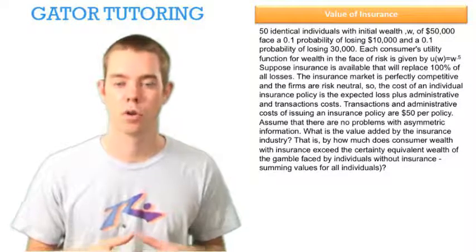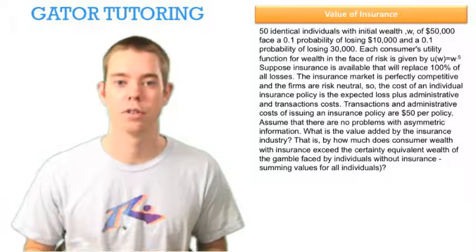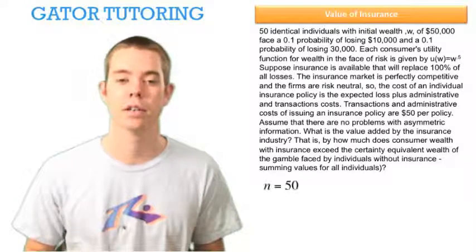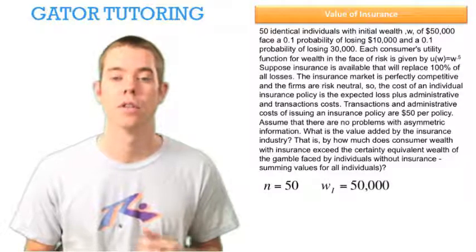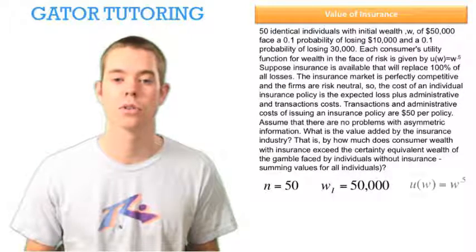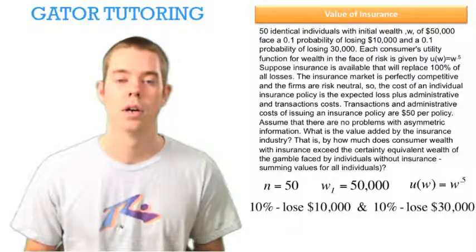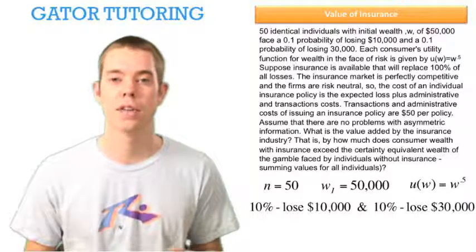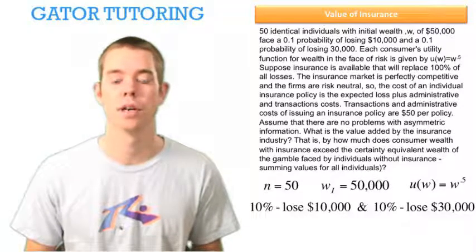This question starts out by giving us a whole bunch of information, and we want to read through it carefully and organize our thoughts. From this paragraph, we see that n equals 50, the number of people equals 50, the initial wealth of each person is $50,000, their utility function is W raised to 0.5, or the square root of W. There's a 10% chance they lose $10,000, a 10% chance they lose $30,000, and that means there's an 80% chance they don't lose any money at all.